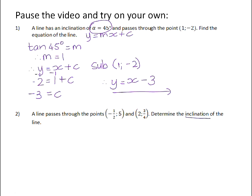Now just a reminder: inclination of a line is defined as the angle between the line and the x-axis measured in an anti-clockwise direction. So for a positive gradient line, the angle of inclination will look like that, and for a negative gradient line, the angle of inclination will look like that.